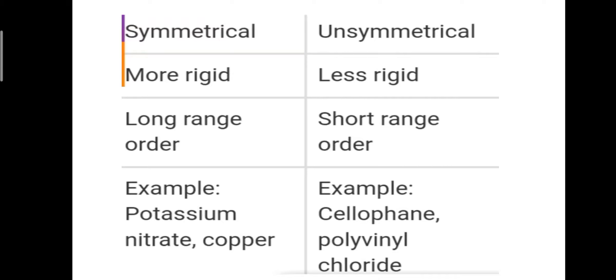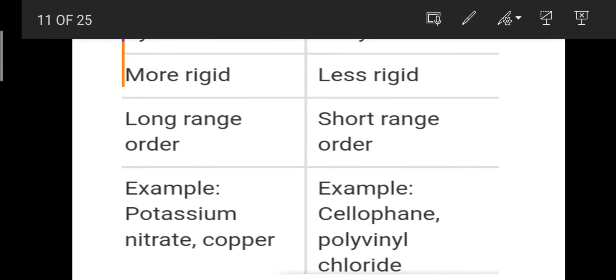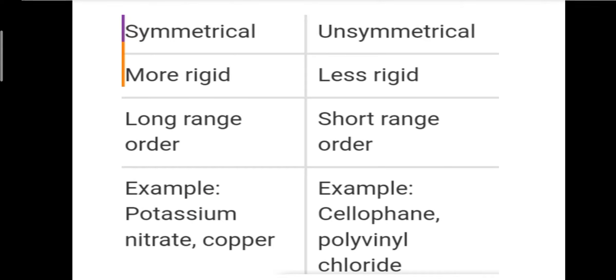Examples of crystalline solids include potassium nitrate and copper sulfate. Examples of amorphous solids include cellophane, polyvinyl chloride, and others.